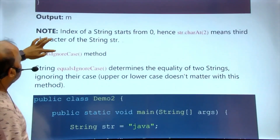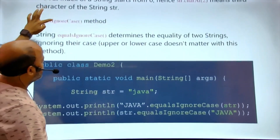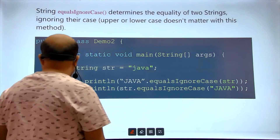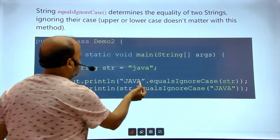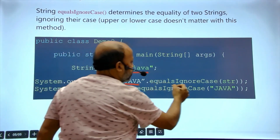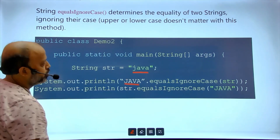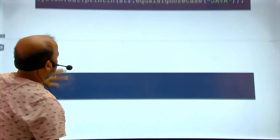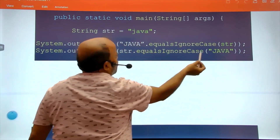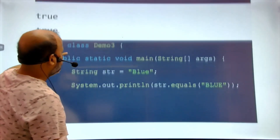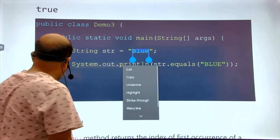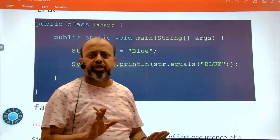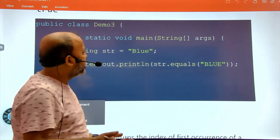Next, to compare strings we have equals() and equalsIgnoreCase(). equalsIgnoreCase(), by its name, ignores the case. For example, 'java' in small letters versus 'JAVA' in capitals — equalsIgnoreCase() gives true because both contain the same characters. If you use only equals(), comparing 'blue' with 'BLUE' gives false, since equals() is case-sensitive.